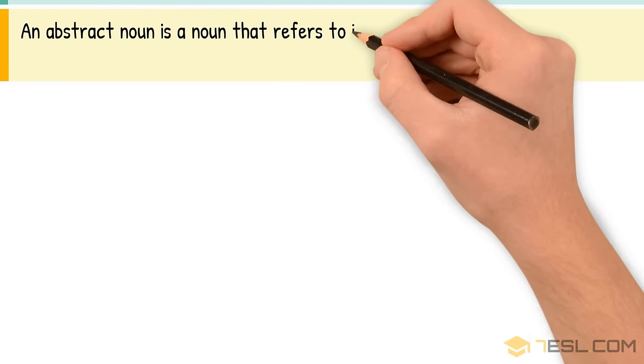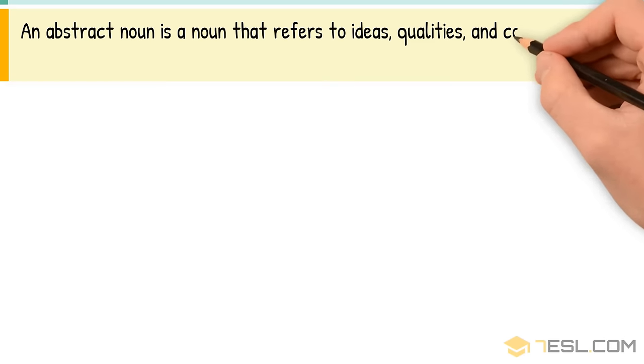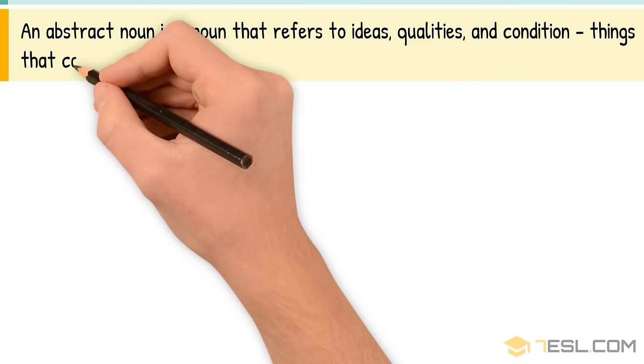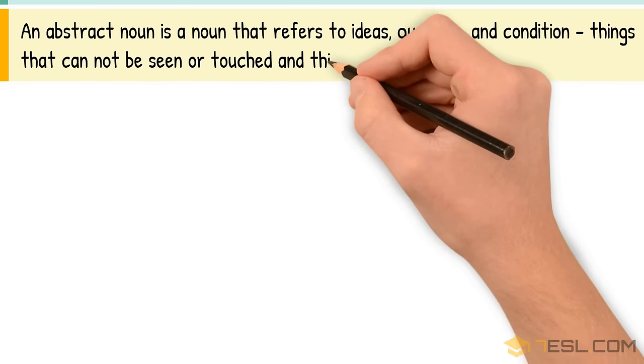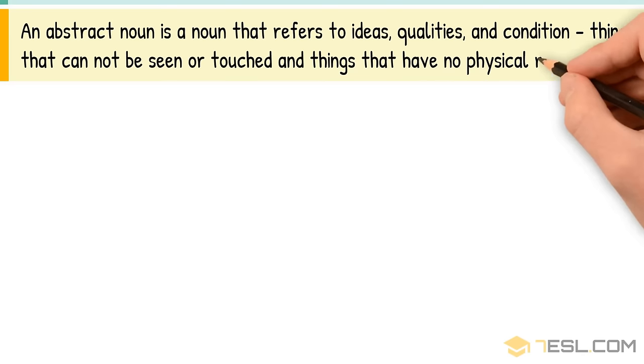Abstract Noun. An abstract noun is a noun that refers to ideas, qualities, and conditions - things that cannot be seen or touched, and things that have no physical reality.